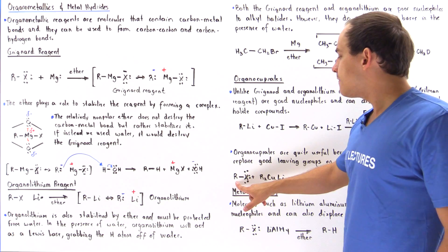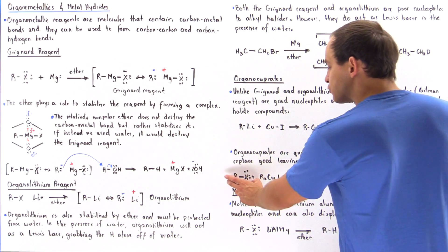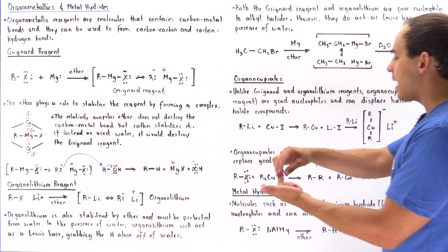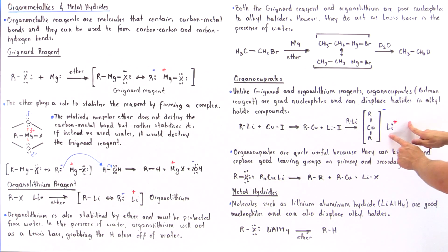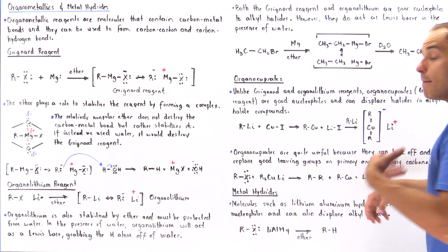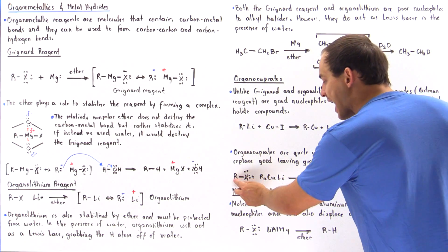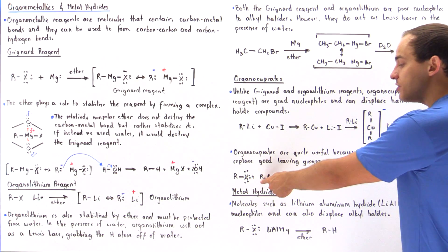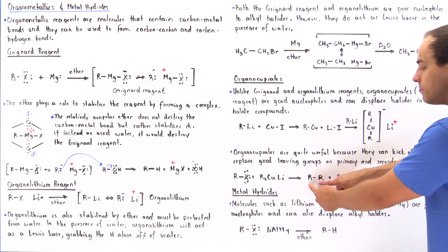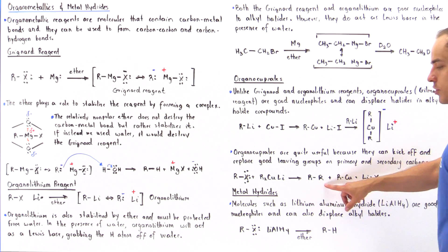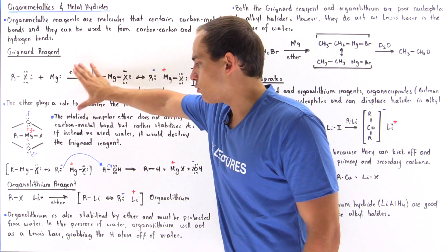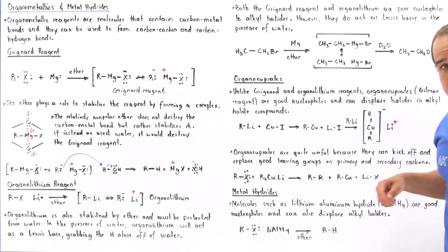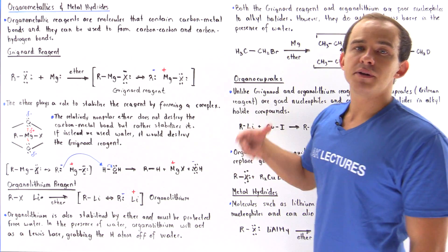Unlike organolithium and Grignard reagents, which are poor nucleophiles, organocuprates are useful because they are good enough nucleophiles to displace and replace good leaving groups on primary and secondary carbons. The general reaction: we take a primary or secondary alkyl halide (where X is chloride, bromide, or iodide), mix it with the lithium organocuprate, and produce a bond between the carbon bearing the leaving group and the carbon on the R group of the cuprate — forming a new carbon-carbon bond.